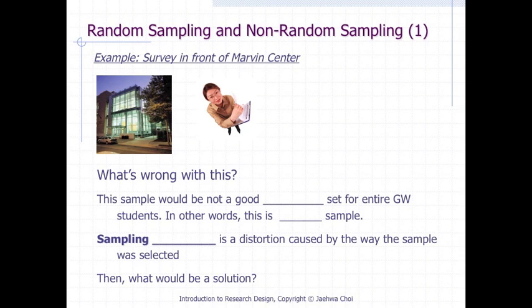We cannot say the students around Marvin Center are representing all GW students. It is very likely that this sample is representing more undergraduate students and less off-campus students. Sampling bias is a distortion caused by the way the sample was selected, as we can see in the survey in front of the Marvin Center example. Then, what would be a solution? In other words, how do we eliminate the sampling bias due to the sampling method?